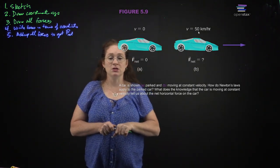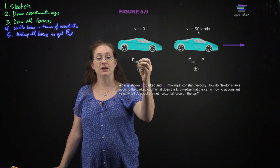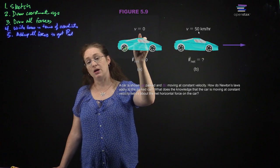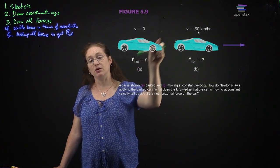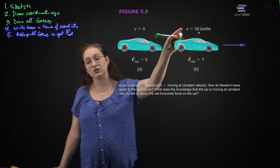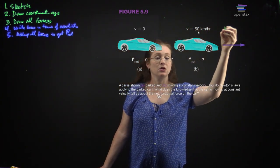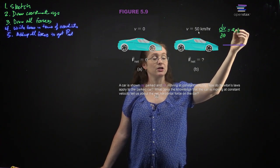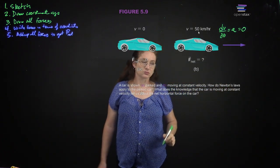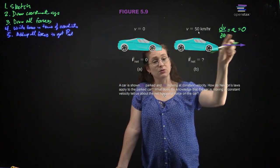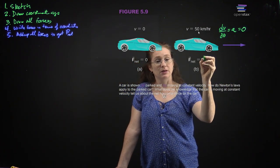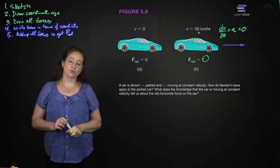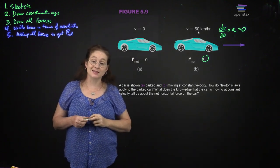A car is parked and a car is moving at constant velocity. In both cases their acceleration is zero. If you're moving at constant velocity, the derivative of velocity with respect to time — the acceleration — is zero. If acceleration is zero, net force is zero. So the net force on the car is zero in both examples.